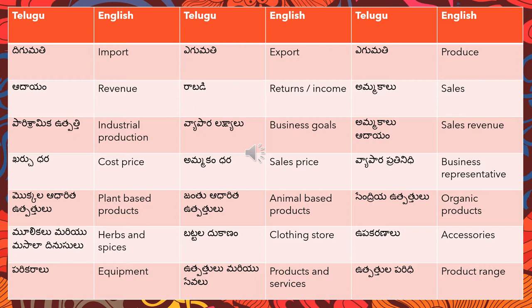The next word is 'utpatti,' that is produce. 'Aadayon' means revenue. 'Rabadi' means returns or income — you can either say returns or income, both mean 'rabadi.' 'Ammakalu' means sales — the sales of this business. The next word is 'parisramika utpatti,' that is industrial production.